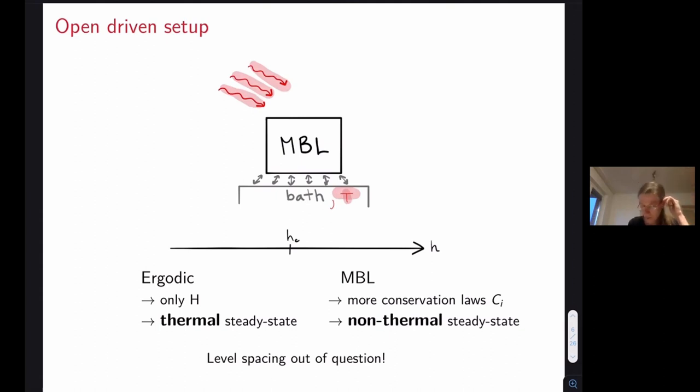That is a consequence of this vast asymmetry in the number of, now in this case approximate conservation laws, that the ergodic and MBL phase has. On the ergodic side we'll effectively have only one approximate conservation law, while on the MBL side we'll have many approximate conservation laws.